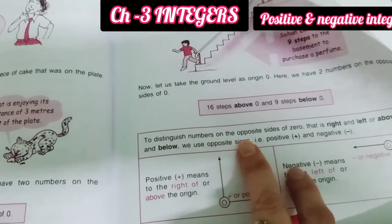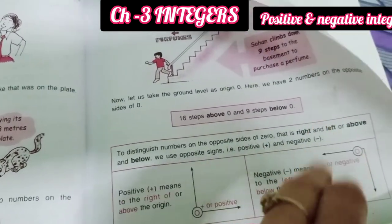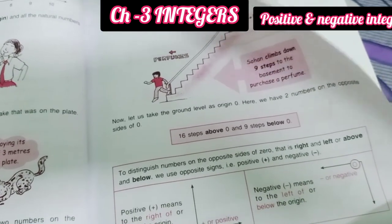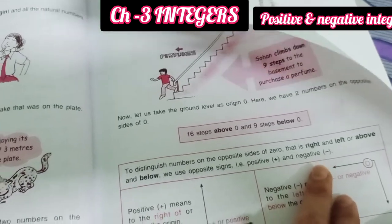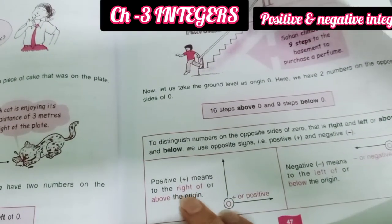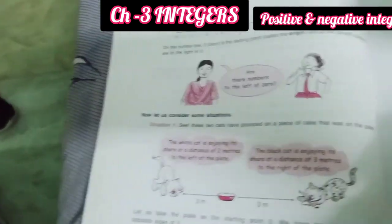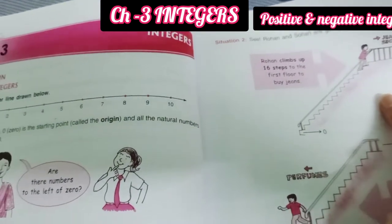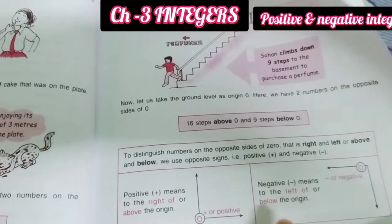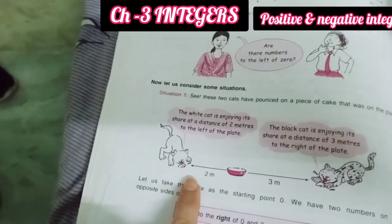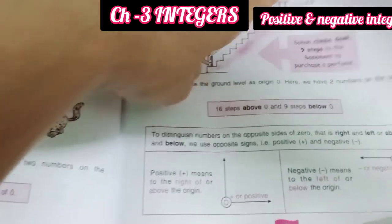To distinguish numbers on opposite sides of 0 — that is right and left, or above and below — we use opposite signs. If one side is positive, the other will be negative. Positive means to the right or above. If a number is to the right or above, it is positive. Negative means to the left or below. If a number is going to the left or below, it is negative.